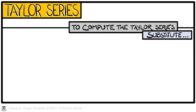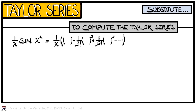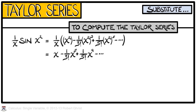Let's begin with an example that displays a substitution method. Consider the function 1 over x times sine of x squared. Computing the Taylor Series for this might be a lot of work — differentiating this is not entirely trivial. However, we do know what sine of x is in terms of its Taylor Series: sine of x is x minus x cubed over 3 factorial plus x to the fifth over 5 factorial, etc. If we use sine of x squared, plugging x squared into the Taylor Series for sine of x, and then multiplying by 1 over x, we obtain something that works. A little simplification gives x minus x to the fifth over 3 factorial plus x to the ninth over 5 factorial, etc.